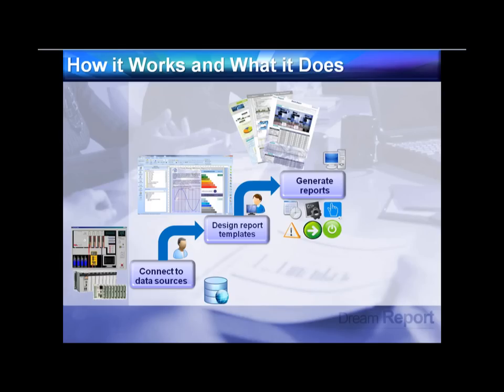You then determine how reports are generated: on a schedule (daily, weekly, every shift), by a command line — for example, an HMI firing off a command to generate a specific batch report with a specific batch ID — or event-based, such as monitoring a bit in the PLC that goes high at the end of a batch, or an analog value like run hours on a piece of equipment exceeding 1000 hours, triggering a maintenance report.